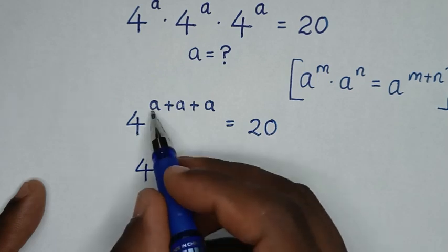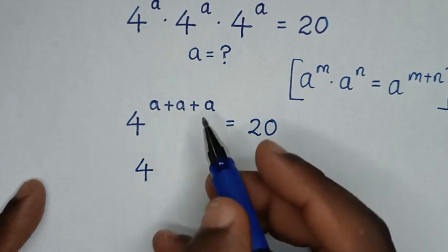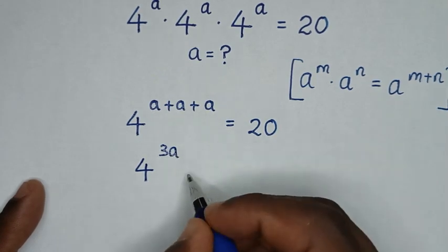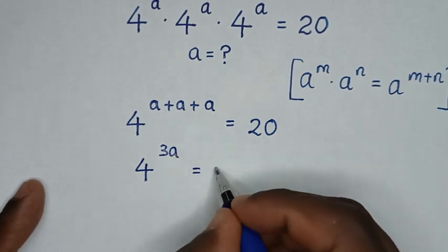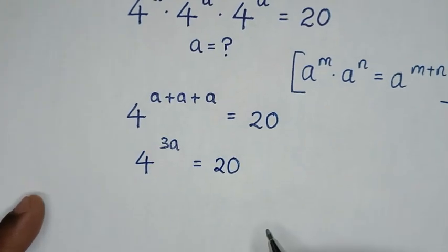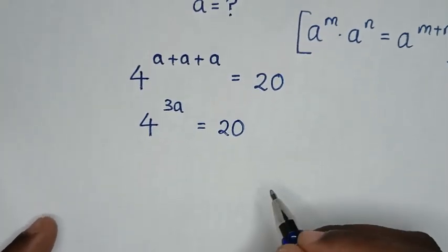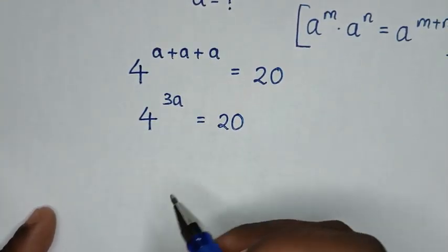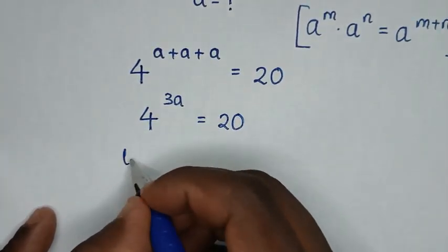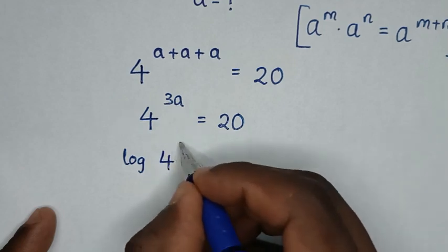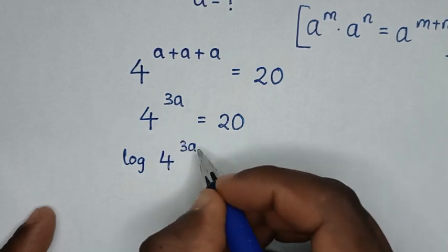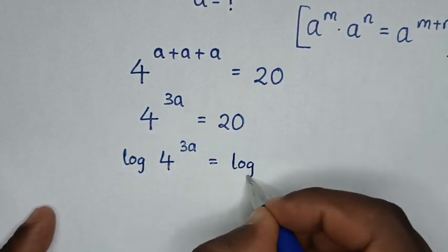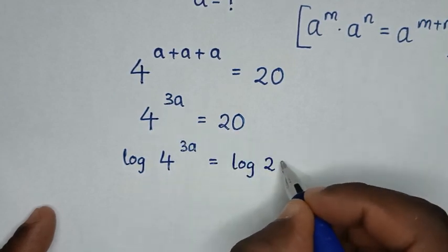So a plus a plus a is 3a, giving us 4 power of 3a equal to 20. In the next step, we will apply log to both sides, so it will be log of 4 power of 3a is equal to log of 20.